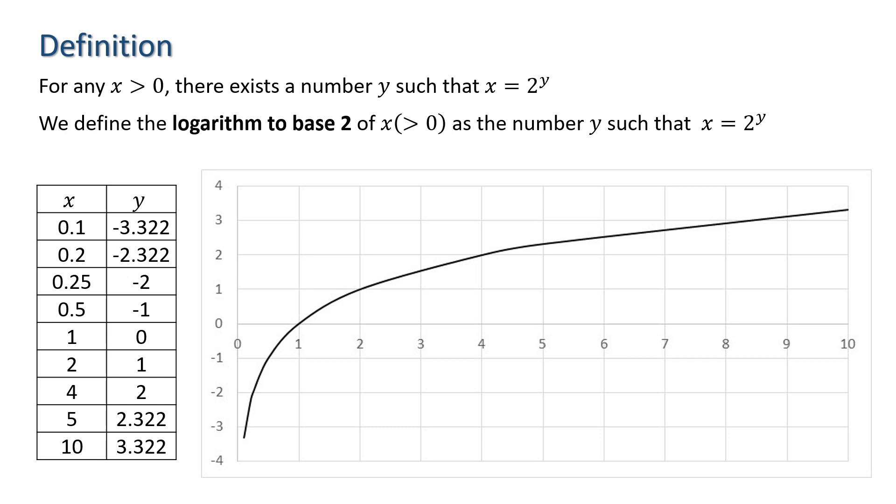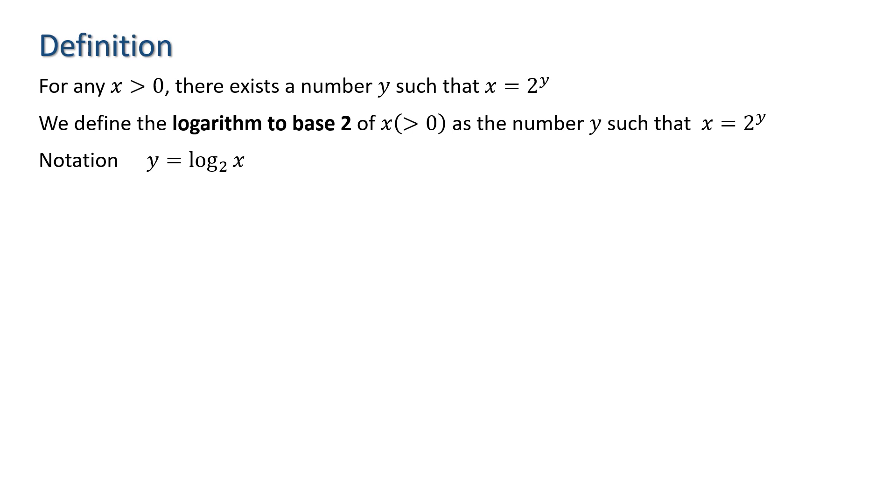This leads us to a definition. The logarithm to base 2 of x is the number y such that x equals 2 to the y. This can be thought of as the inverse of the exponential function y equals 2 to the x. The notation for this is y equals log to base 2 of x.